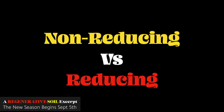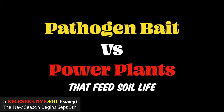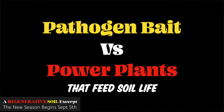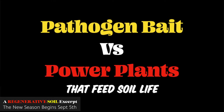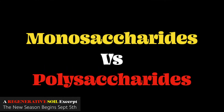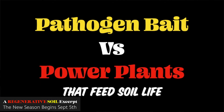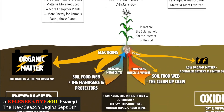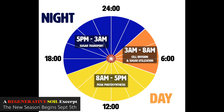When plants aren't doing things properly they become pathogen bait. When they can't process their sugars properly, they become pathogen bait instead of power plants. Monosaccharides — that's the bait. Polysaccharides — that's the power plant for the ecosystem, and it also feeds soil life. The crux of it is: if a plant can properly handle its sugars and process them in the 24-hour period it has evolved to do so, incredible things will happen. Peak photosynthesis occurs when the sun is shining, and later in the day those sugars are transported.